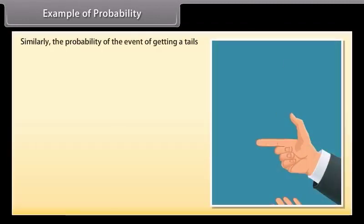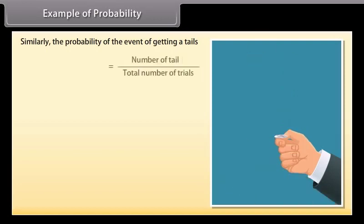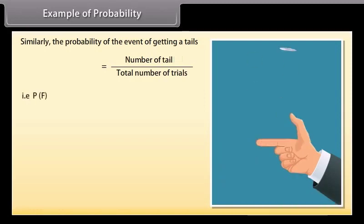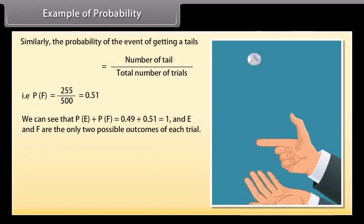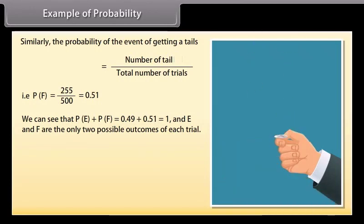Similarly, the probability of the event of getting a tail equals number of trials upon total number of trials. P(F) equals 255 upon 500, which equals 0.51. We can see that P(E) plus P(F) equals 0.49 plus 0.51, which equals 1, and E and F are the only two possible outcomes of each trial.